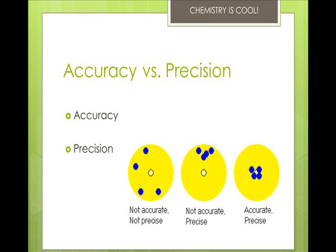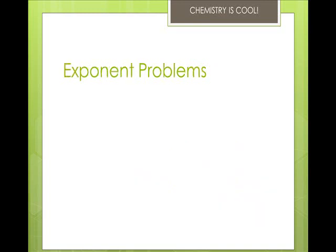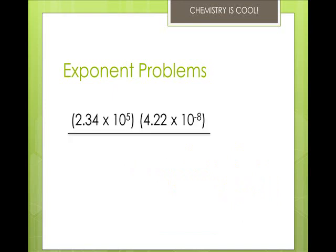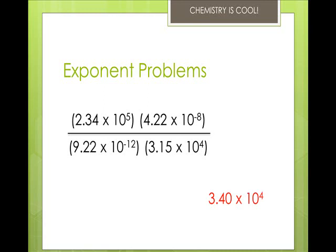Okay, now I did warn you that exponent problems were going to come up, and we're going to start with them now. So let's take a look at these four quantities: you have 2.34 × 10^5 × 4.22 × 10^-8 divided by 9.22 × 10^-12 × 3.15 × 10^4. The first thing you need to remember is that when you have a negative exponent in a fraction, you flip its position. So the negative 12 quantity would go up to the top, the negative 8 quantity would go down to the bottom, and then you add and subtract. Your final answer is going to be 3.40 × 10^4. I highly recommend you practice with this material; it will bite you in the butt later if you do not.